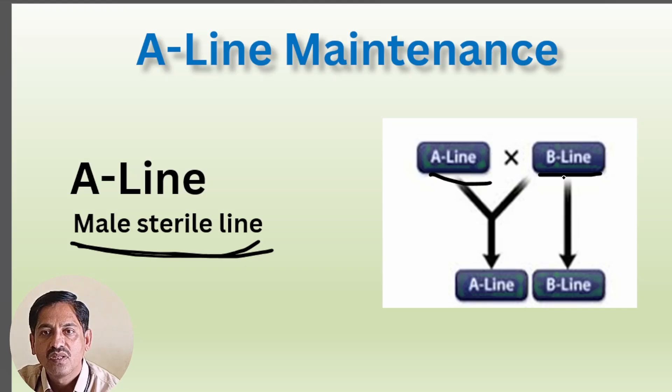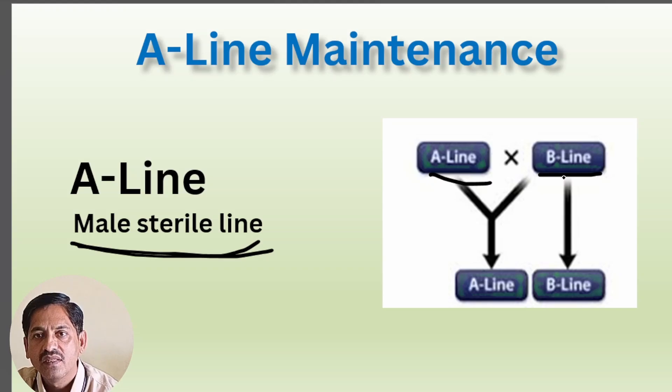A and B are isogenic — both are phenotypically similar lines.